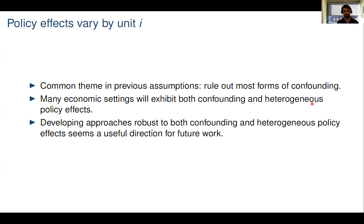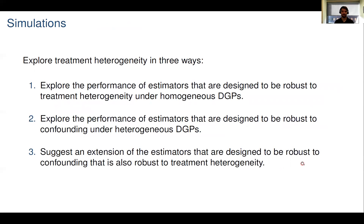Today, I will suggest one approach in this direction. To do so, I will turn to a simulation exercise and highlight the performance of different approaches under a number of DGPs we think are reasonable approximations to economic settings of interest. I will explore what happens when we add heterogeneous policy effects in three ways: first, the performance of estimators designed to be robust to treatment heterogeneity under DGPs with homogeneous policy effects; second, the performance of estimators designed to be robust to confounding under heterogeneous DGPs; and finally, an extension of those estimators that is also robust to treatment heterogeneity, explored under DGPs with both confounding and treatment heterogeneity.